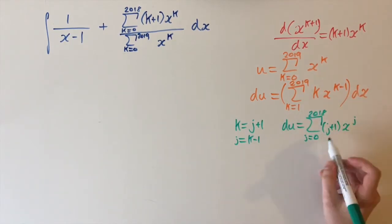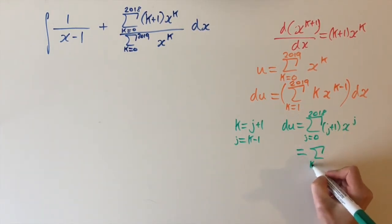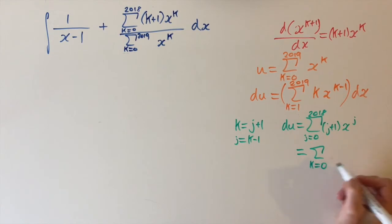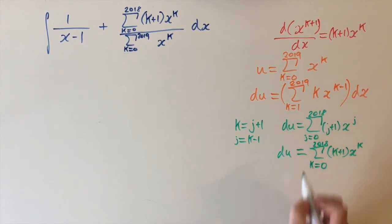And this is actually exactly the same series. I can rewrite it in terms of k. It doesn't matter what the index is. But this is k equals 0 up to 2018 of k plus 1 times x to the k. So du equals all this.